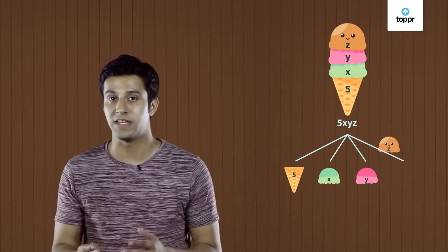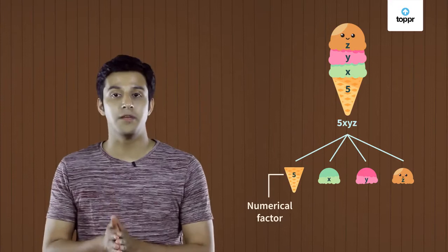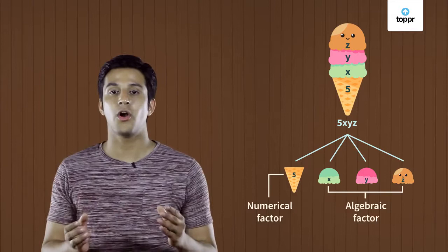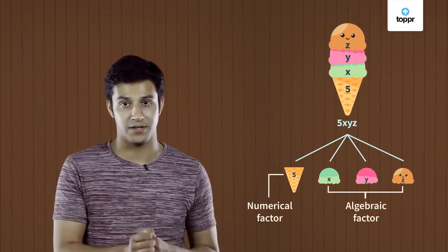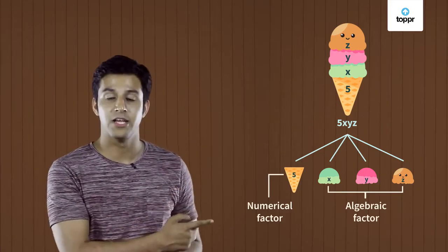Each term has parts which multiply together to give that term. For example, the cone with three scoops had four parts: the cone, scoop 1, scoop 2, and scoop 3. These separate parts of a term are called its factors. There are two types of factors: a numerical factor and algebraic factors. The numerical factor of a term is called the coefficient of that term. So here, 5 is the coefficient of the term 5xyz.